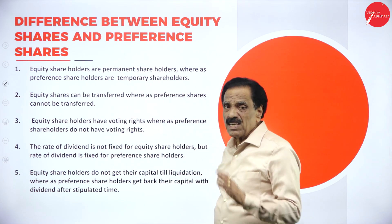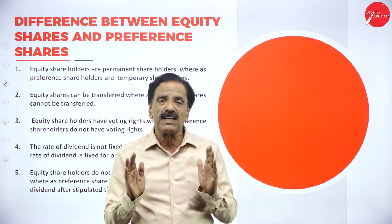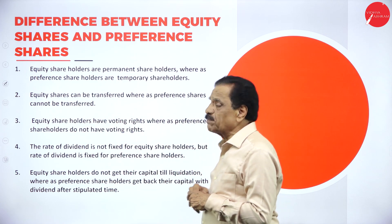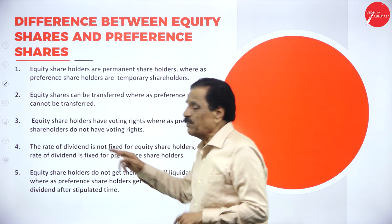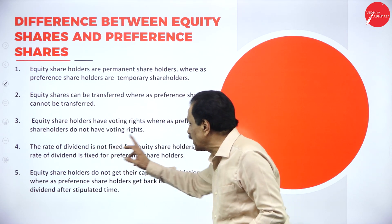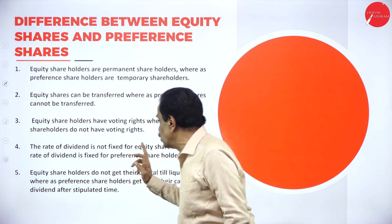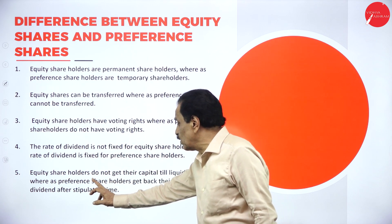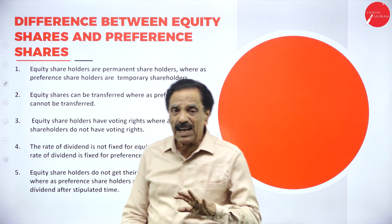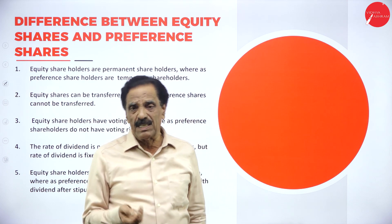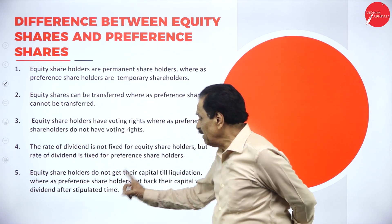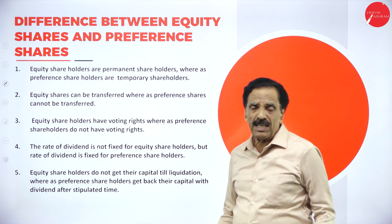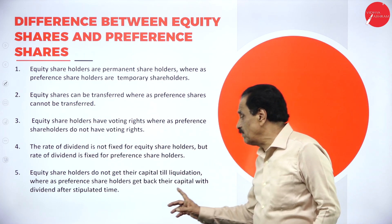Fifth difference: equity shareholders do not get their capital back until liquidation, whereas preference shareholders get back their capital with dividend after the stipulated term. Equity shareholders' money is paid back only at the time of liquidation, but they can transfer the share. Preference shareholders get back their capital with dividend after the stipulated time. So these are the five key differences between equity and preference shares.